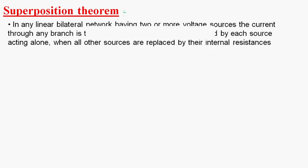Hi guys, today we are going to study about the superposition theorem. Superposition theorem states that in any linear bilateral network having two or more voltage sources, the current through any branch is the algebraic sum of the currents produced by each source.